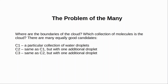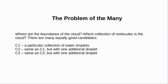There are indefinitely many candidates that are equally good. So we have, let's call it C1, a particular collection of water droplets, C2 — same as C1 but with one additional droplet — C3 and so on. There are trillions of different ways of drawing the exact boundaries. All of these and many more appear to have equal claim to being the cloud. If we say that all of them are a cloud, then what we thought was one cloud is actually many trillions of different clouds.